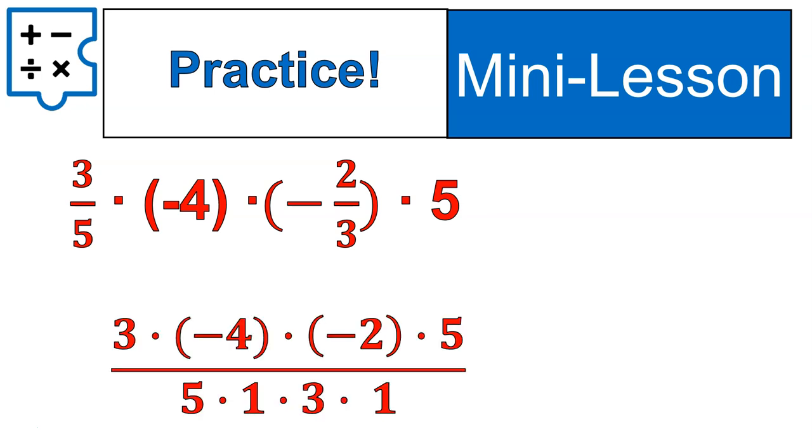All right, welcome back. First, I'm going to make these all into fractions. And in one step, I'm going to make the fraction bar uniform across. So, basically what I have there is 3 over 5, negative 4 over 1, negative 2 over 3, and 5 over 1. That's what I have.